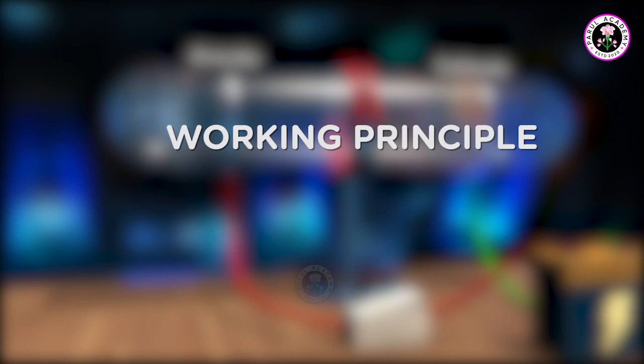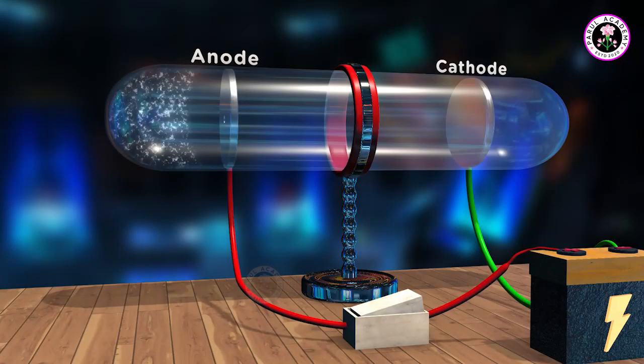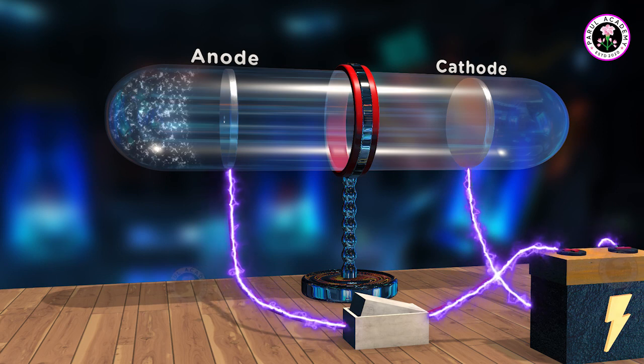Working principle of cathode ray tube: Due to the connection of a high voltage battery, charge starts to flow from cathode to anode.